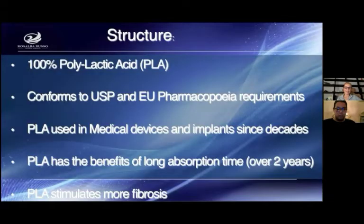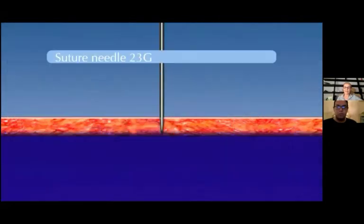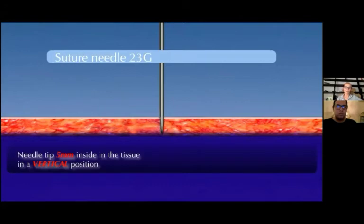100% polylactic acid stimulates more fibrosis and has the benefit of a long reabsorption time of over two years. When you insert the suture, you first prepare the entry point with an 18-gauge needle, then use the suture needle at 23 gauge. You enter 5 millimeters in vertical position inside the tissue, then turn the needle 90 degrees and go towards the first exit point.